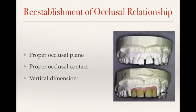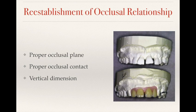Interim removable partial dentures can also help to establish an occlusal relationship. Once a patient loses a tooth, if they didn't get treatment right away, adjacent or opposing teeth may migrate or erupt, so the occlusal contacts would not be ideal. We want something that can correct that — to rebuild the proper occlusal plane and proper occlusal contact. Even sometimes when a patient loses a tooth, they eventually lose their vertical dimension, and we have to reestablish a new vertical dimension for our final treatment.